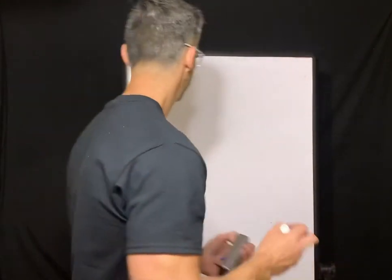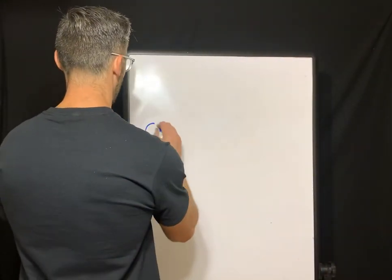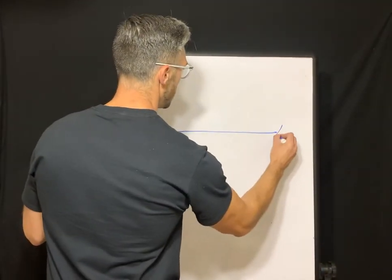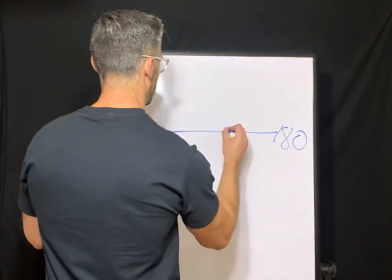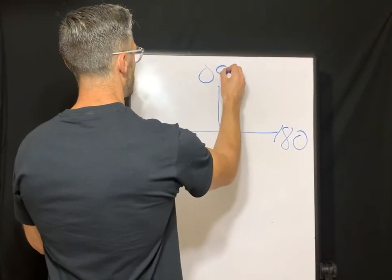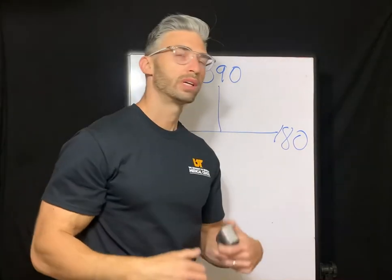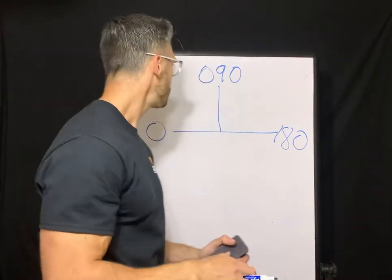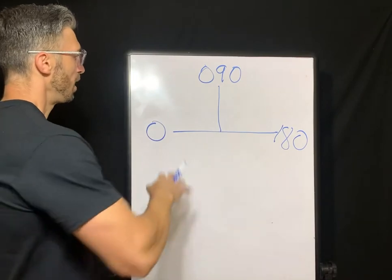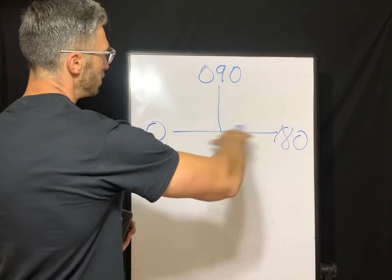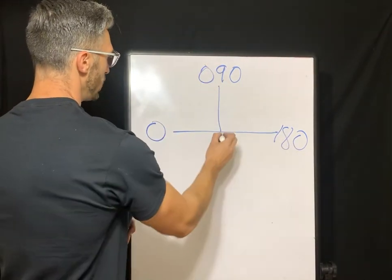So we're going to look at some good examples, look at some prescription examples so you can comfortably define these. To get started, I'm going to draw a compass on the board here. Just going to help guide us along. We have our horizontal meridian, we have our vertical meridian.